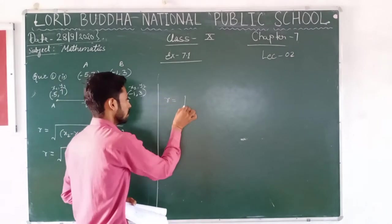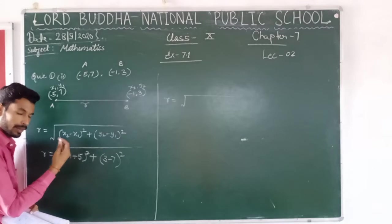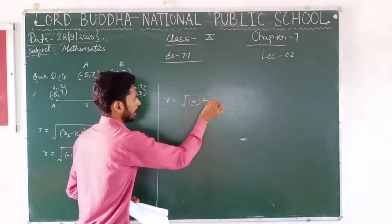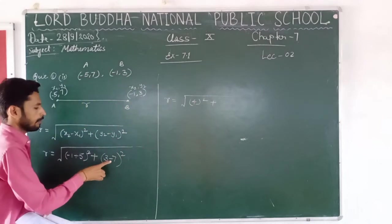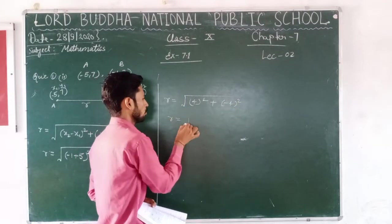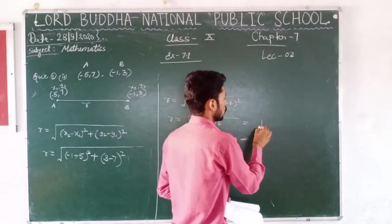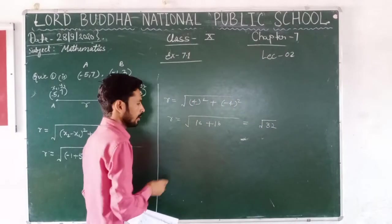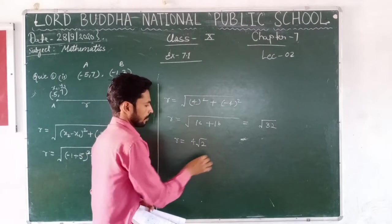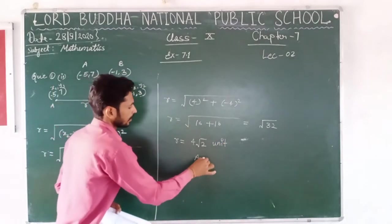So r equals to square root of: minus 1 plus 5 equals 4, so 4 squared, plus 3 minus 7 equals minus 4, so minus 4 squared. Then r equals to square root of 16 plus 16, which equals square root of 32. So r equals to 4 root 2 units. That will be the answer for this question.